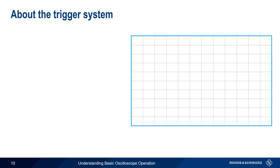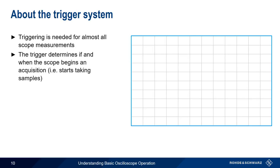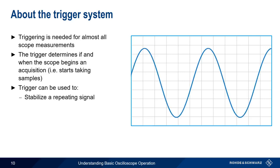The trigger system is extremely important because triggering is needed for almost all oscilloscope measurements. Essentially, a trigger defines the conditions that have to be met before the scope begins an acquisition or begins taking samples. Triggering can do two different things. First, it can stabilize a repeating or periodic signal, such as a sine wave, by causing each sweep to start at a given point on the signal.